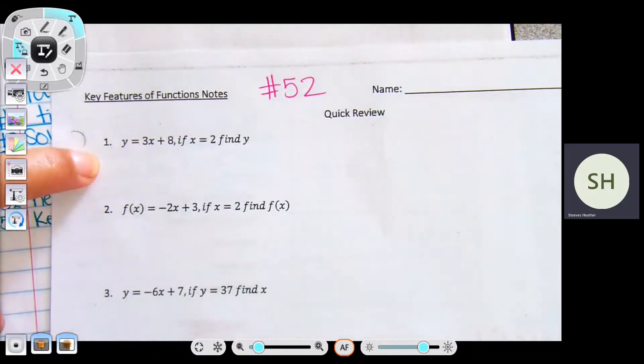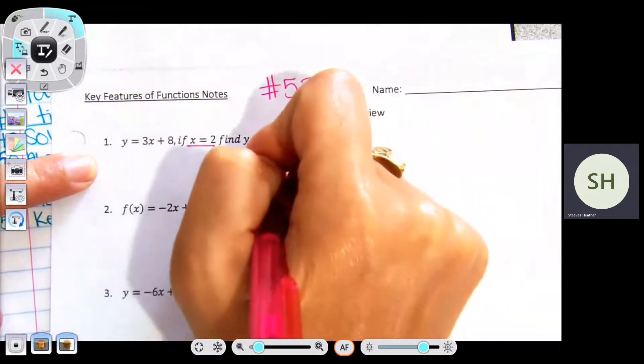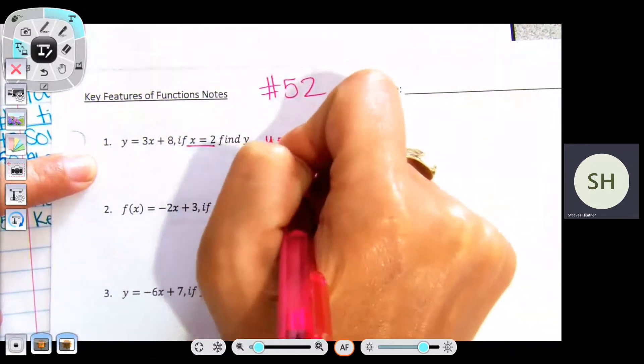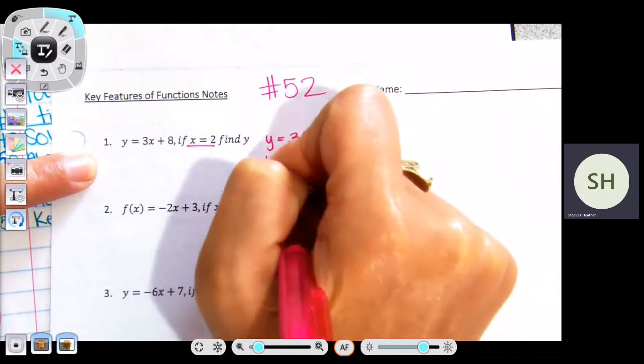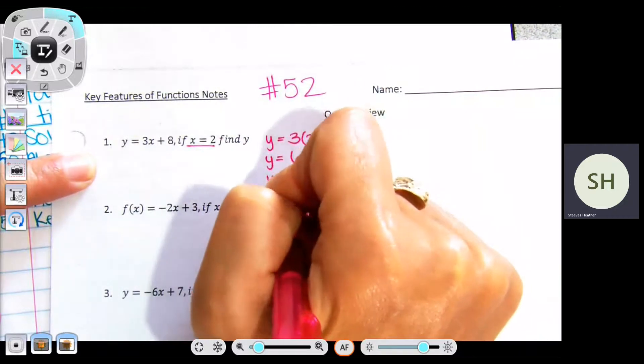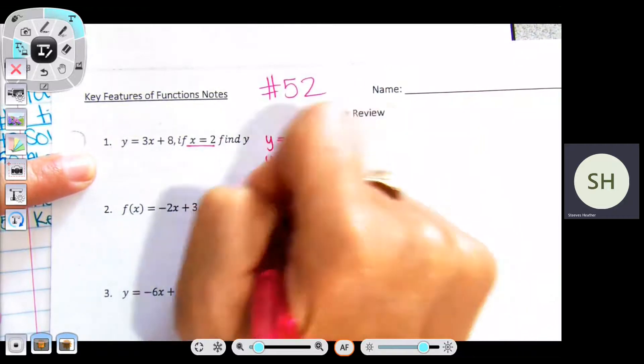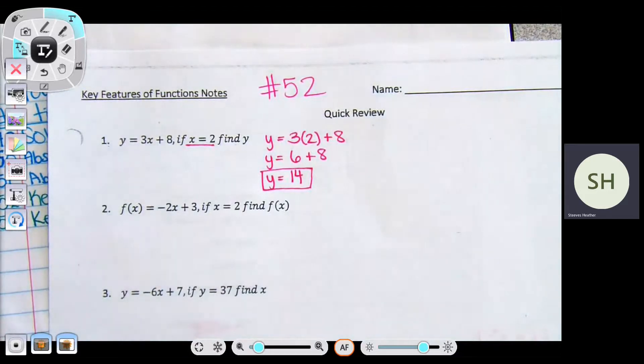It says y equals 3x plus 8. If x equals 2, find y. So all you're going to do is take your x value and plug it in to where x is. Yes, tell me the answer. Y is 14. Beautiful. So you have 3 multiplied by 2 plus 8. Three times two is 6 plus 8. What is it? 14. OK, so that is normal. You should have did this last year.